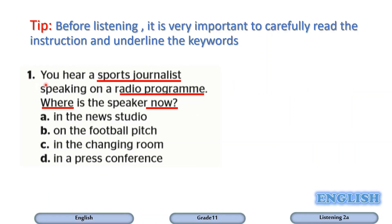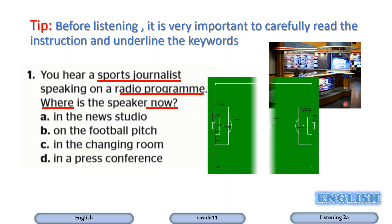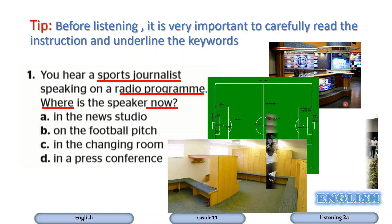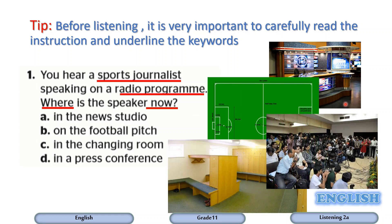All right, let's read carefully the situation number one. You hear a sports journalist speaking on a radio program. Where is the speaker now? The question is to identify the location of the speaker. Options: in the news studio, on the football pitch, in the changing room, or in a press conference. Let's check — listen carefully to the recording.